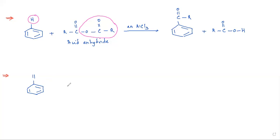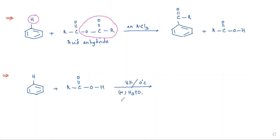Acylation can also be carried out using benzene and a carboxylic acid in different varieties. When a carboxylic acid is used for the generation of electrophiles, HF or phosphoric acid or polyphosphoric acid is used. In this case, a water molecule is removed and we get the same acylbenzene.